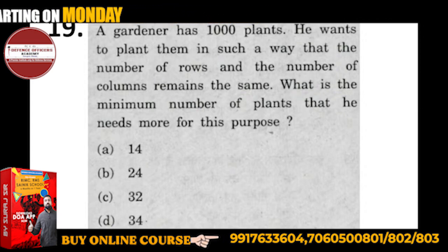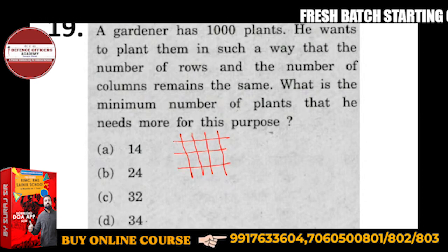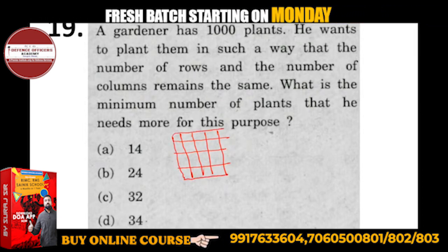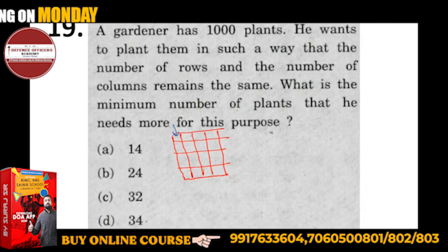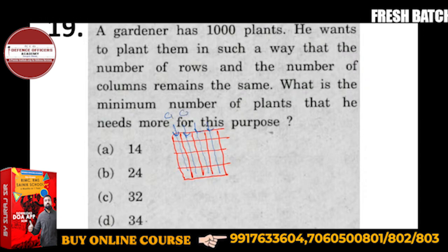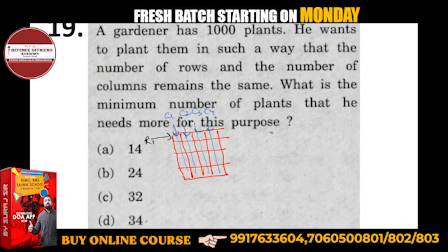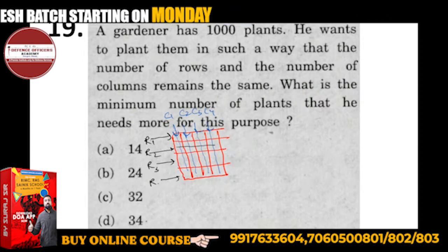Number of rows and number of columns — rows are horizontal and columns are vertical. If you have the same number of rows and columns, for example here are 4 columns: c1, c2, c3, c4. How many rows are there? There are 4 rows: r1, r2, r3, r4. So same rows and same columns.